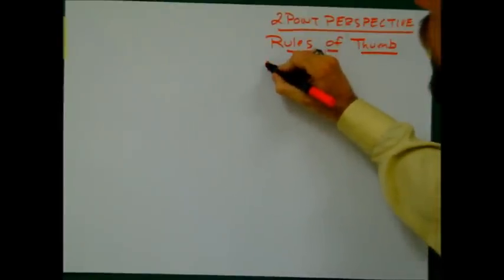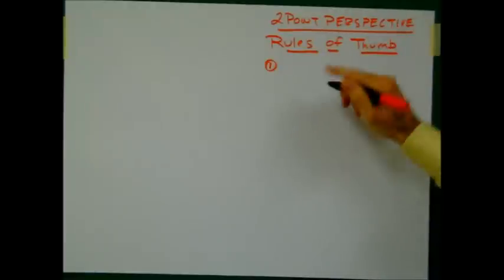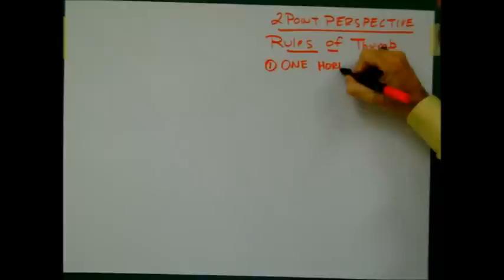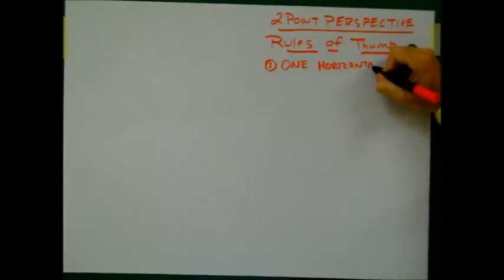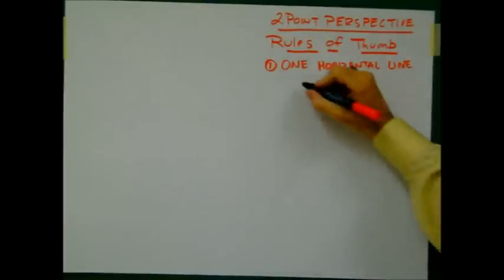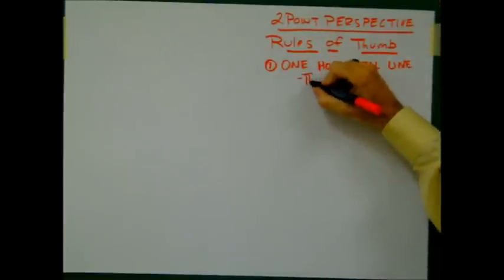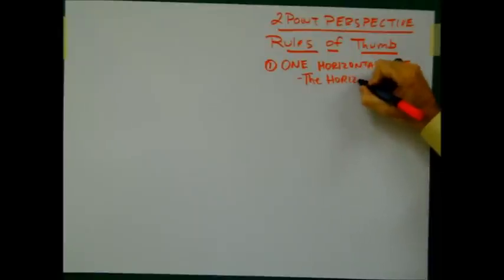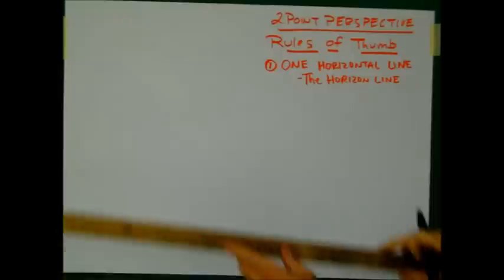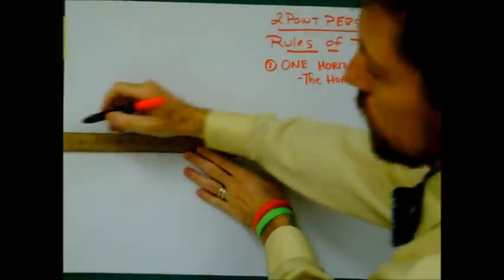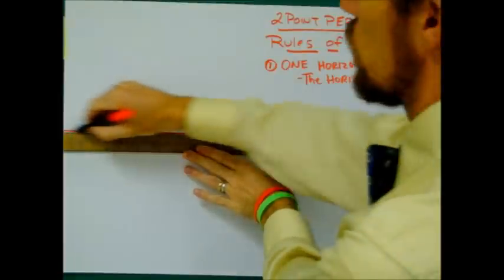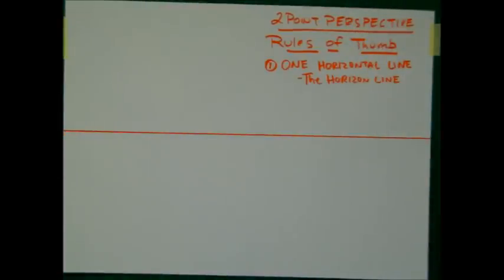The first rule of thumb for two-point perspective is that there is one horizontal line. There's only one horizontal line when we're dealing with the technical end of two-point perspective, and that is the horizon line. So let's just take a moment and draw out our horizon line — there's the one horizontal line we're going to use throughout this particular drawing.